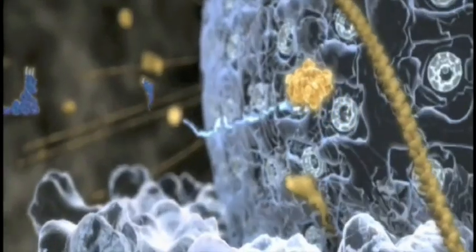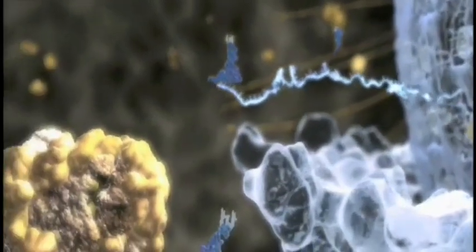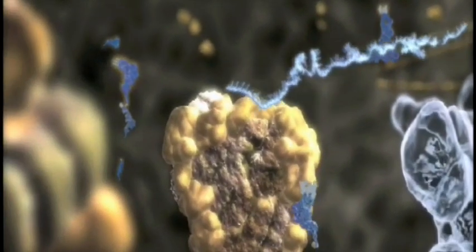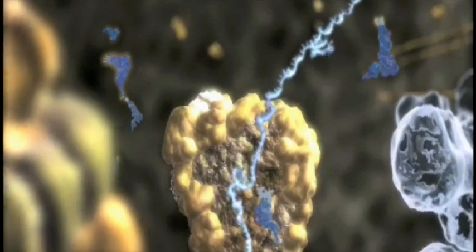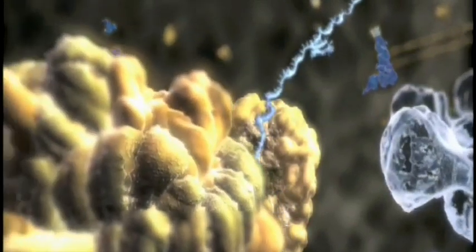Now we see the genetic assembly instructions on the messenger RNA approaching and arriving at a two-part chemical factory called a ribosome, the site of protein synthesis.